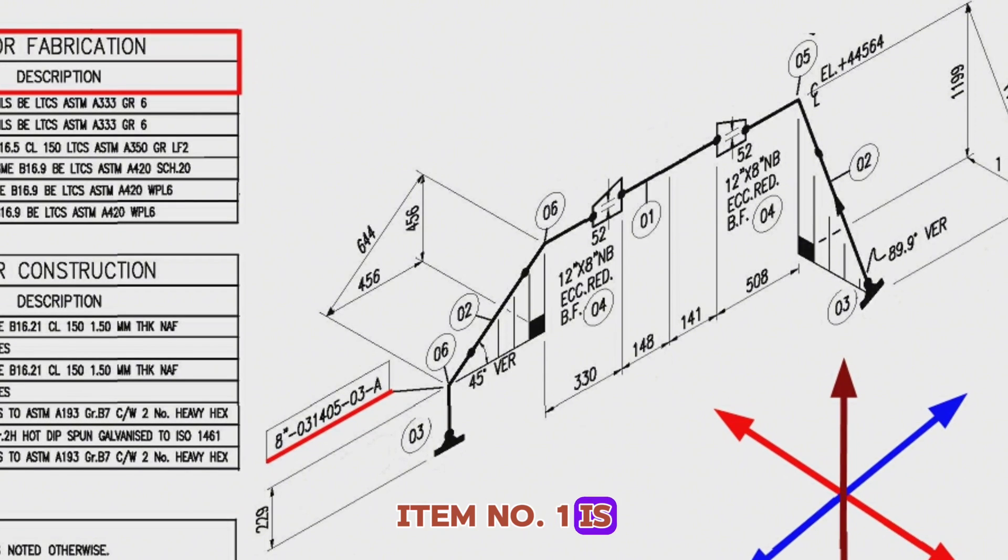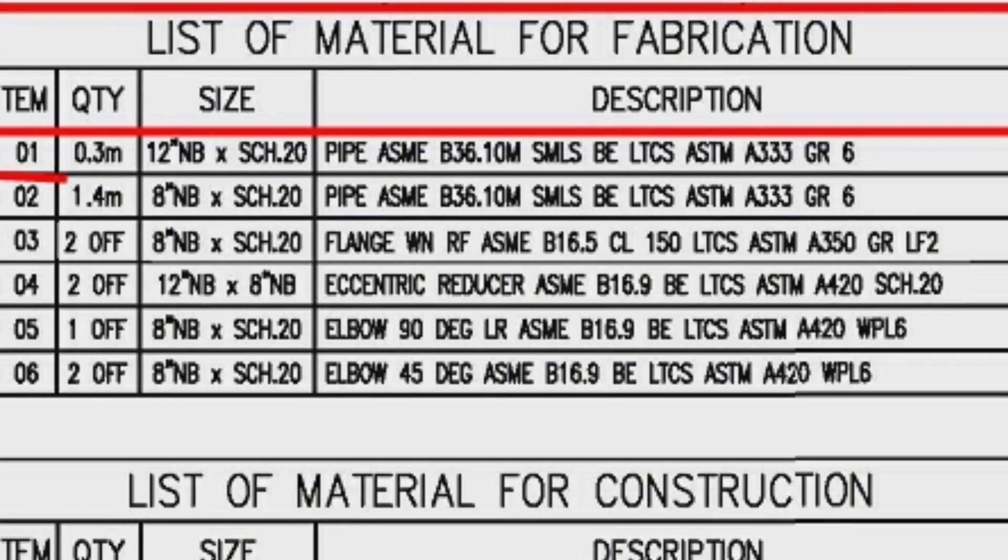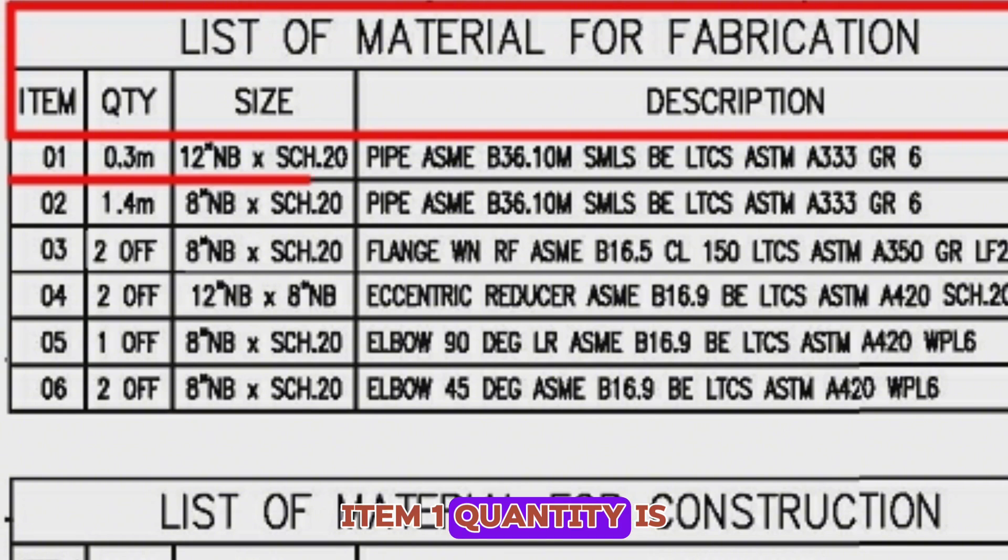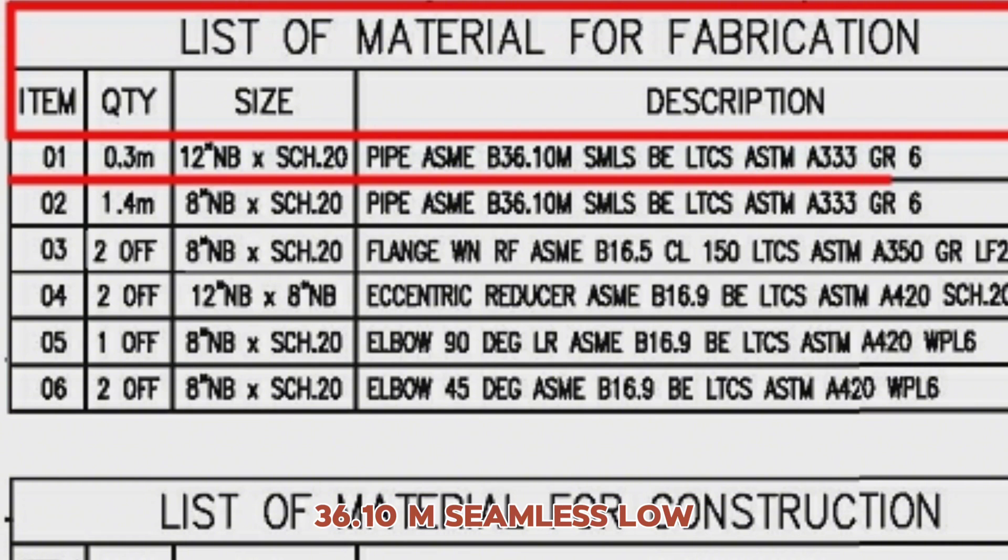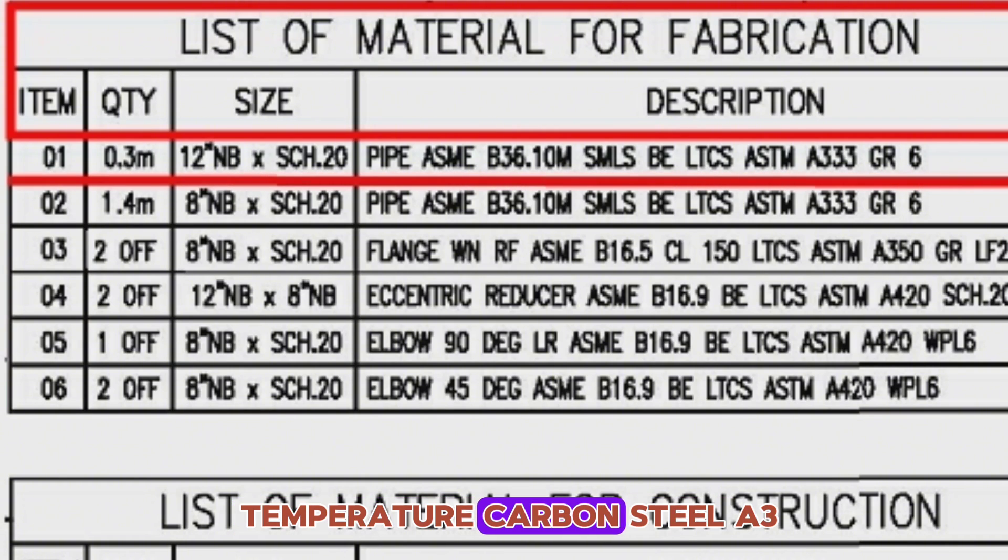Item number 1 is shown at one point in the isometric drawing. Let's look at the bill of material. Item 1, quantity is 0.3 meters, size is 12-inch NB, schedule 20, pipe ASME B36.10M seamless, low-temperature carbon steel, A333 grade 6.